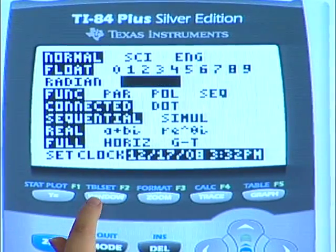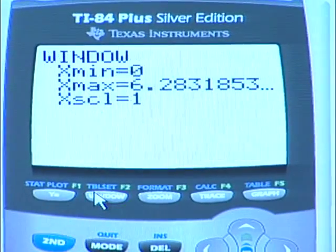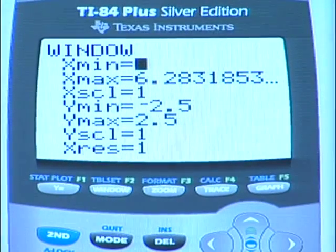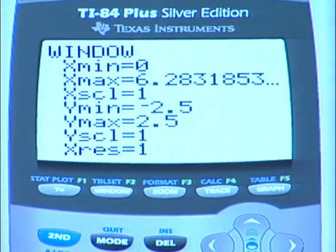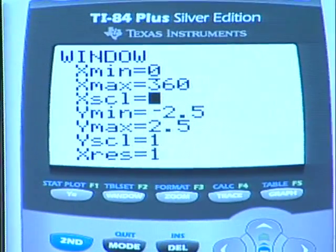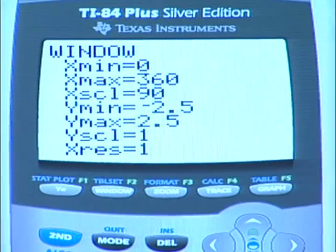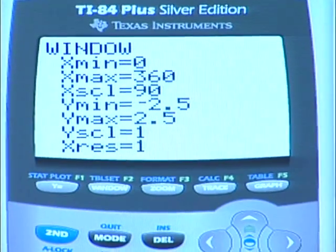Then we go back to our window settings and we set x min as 0, x max at 360 degrees and x scale as 90 because we want 4 grids displayed on the screen.